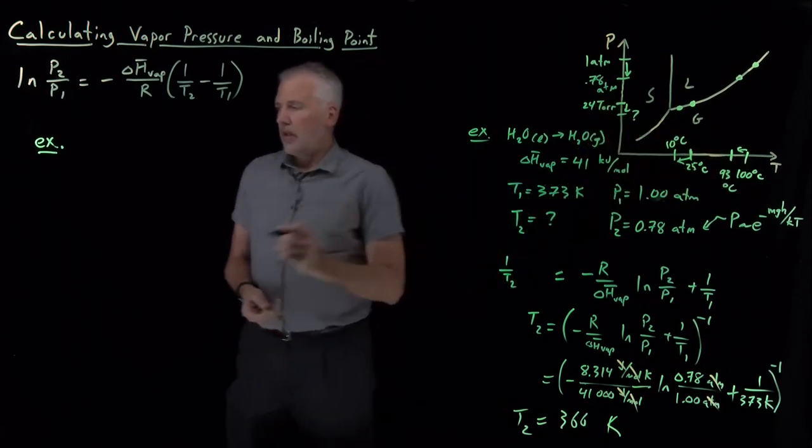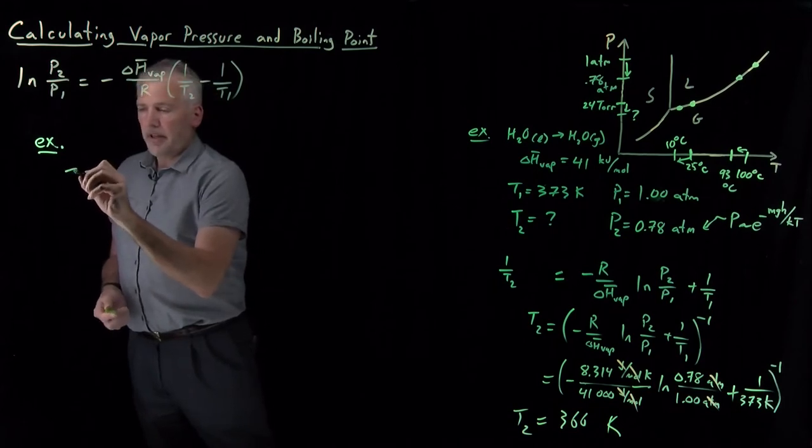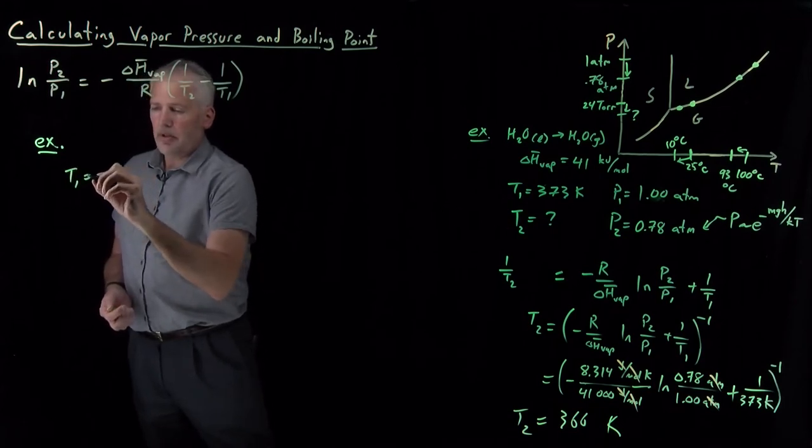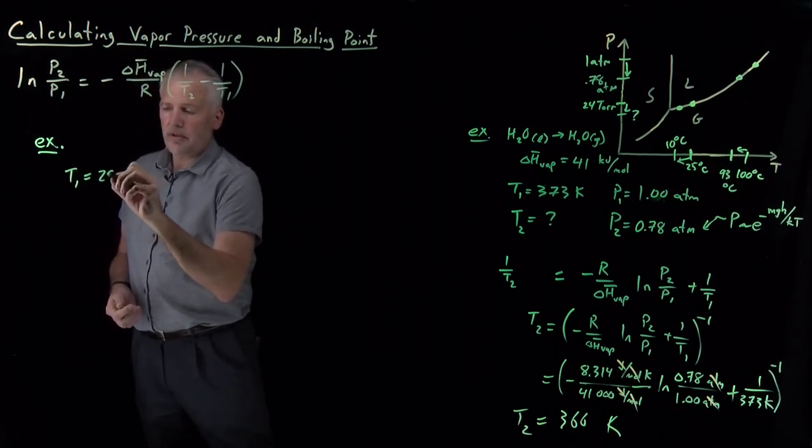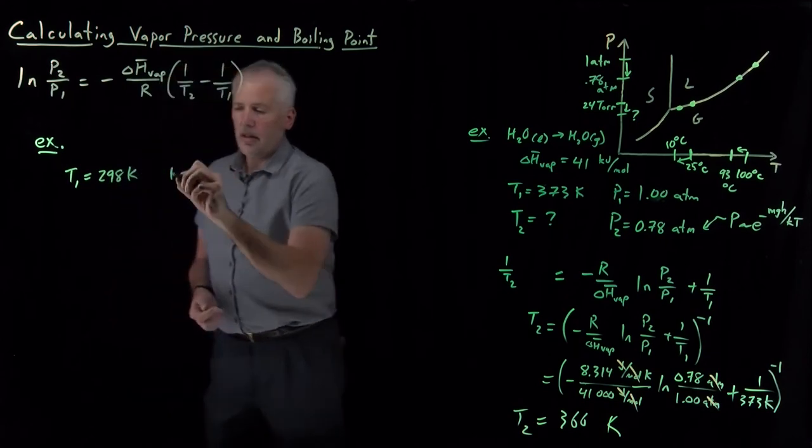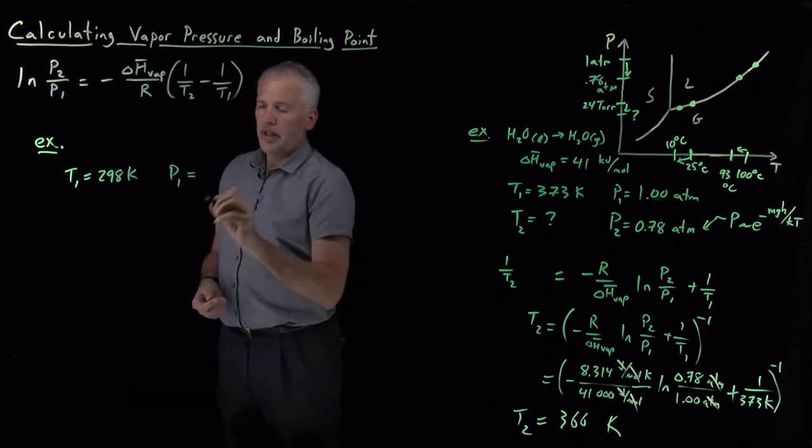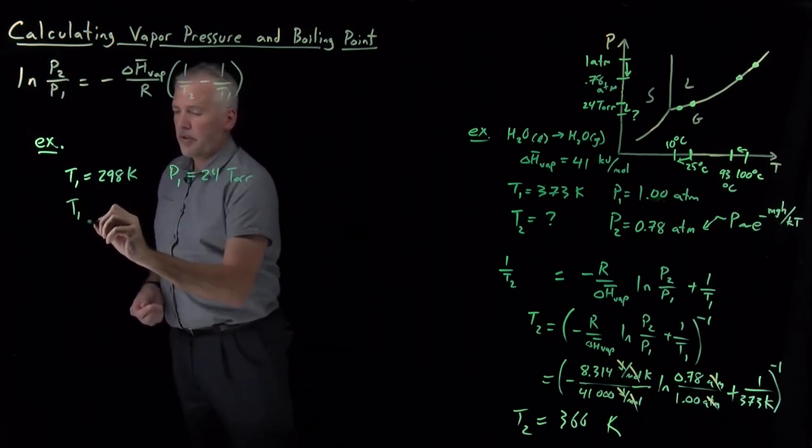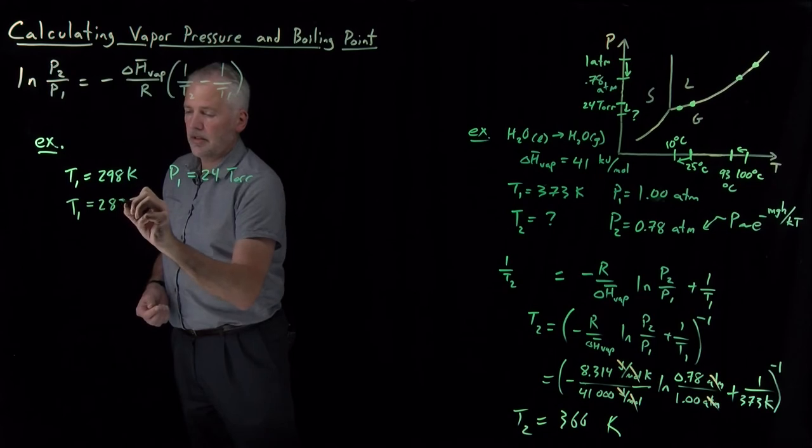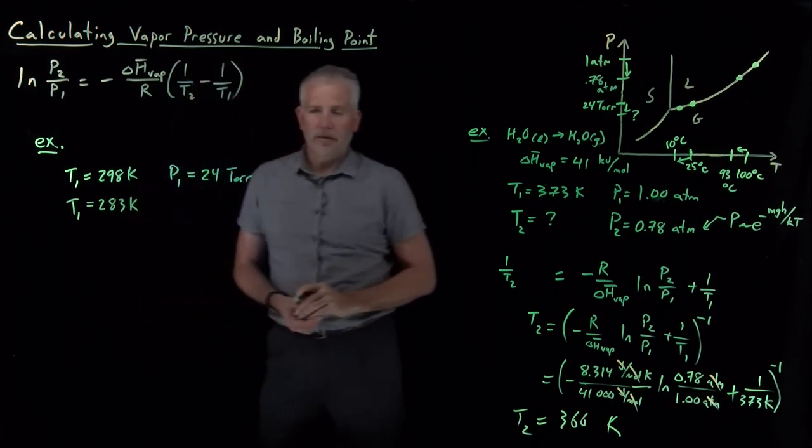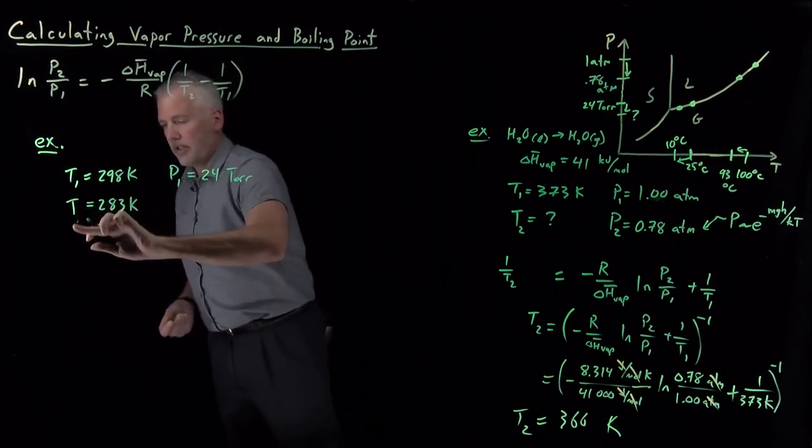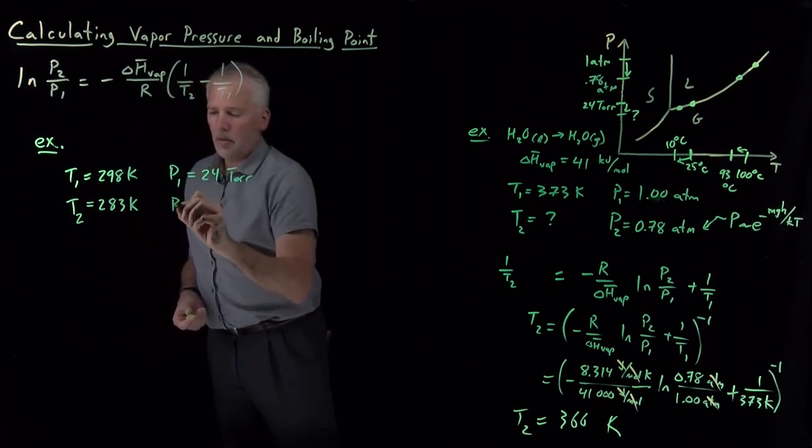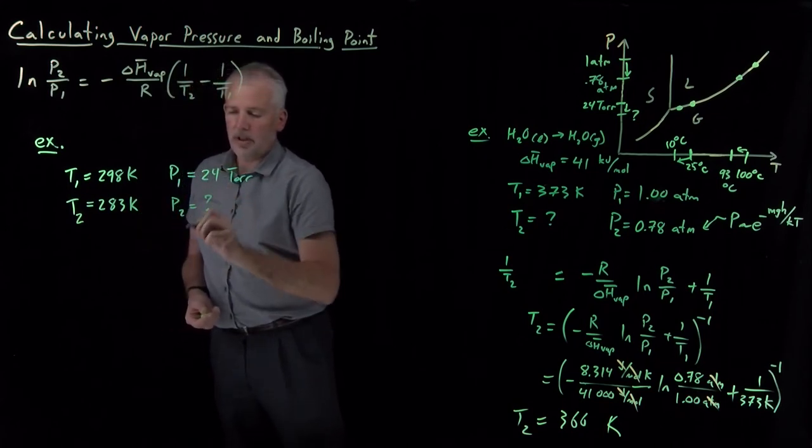pointing out also that the terminology differs when we're talking about vapor pressures rather than boiling points. So the question I've set up is if I've got temperature 1 is equal to 25 Celsius or 298 Kelvin, the vapor pressure is 24 tor. At a lower temperature of 10 Celsius, 283 Kelvin, that's T2, what would be the vapor pressure under those conditions?